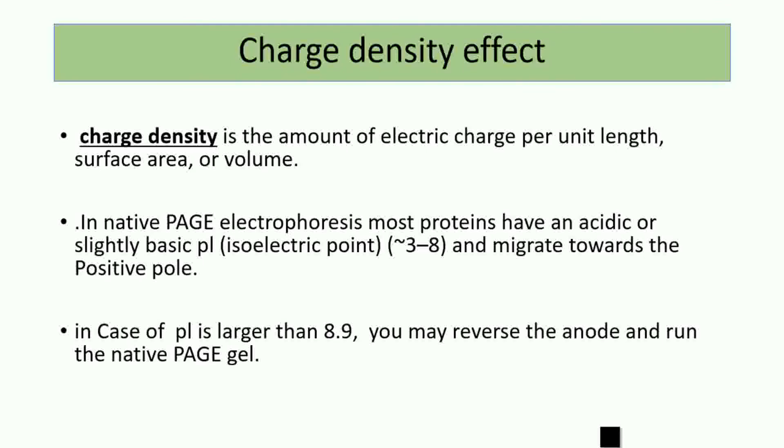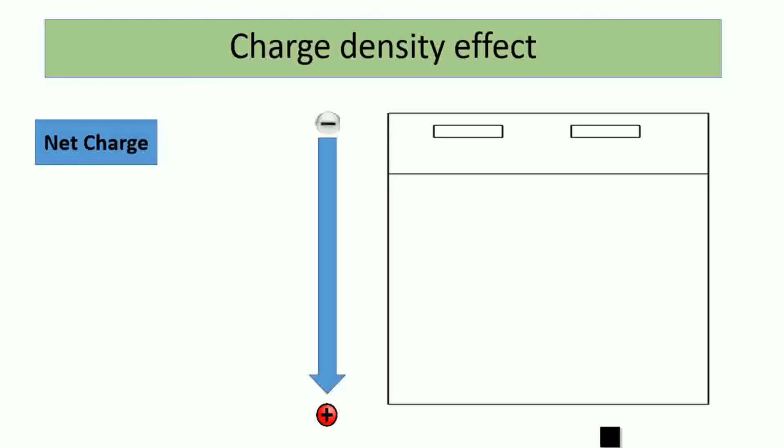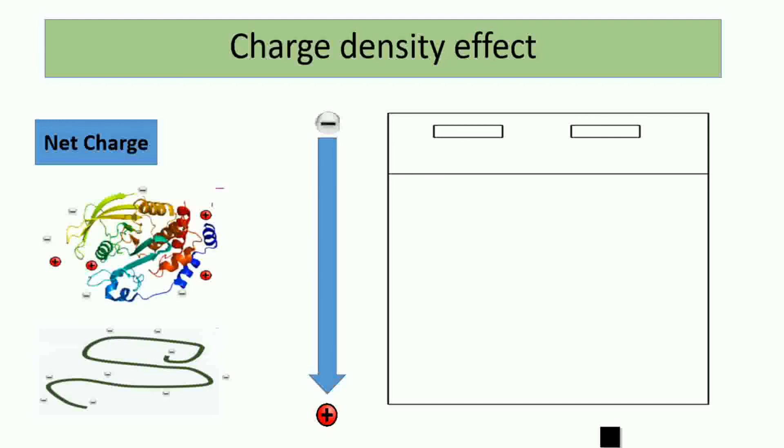The majority of proteins have isoelectric point between 3 and 8, so they move towards the positive pole. For proteins with isoelectric point higher than 8 or 9, we might reverse the anode and cathode. Proteins generally move from negative to positive pole. If we have two proteins, one highly negatively charged and one more neutral, the protein with more negative charge moves fastest toward the positive pole.